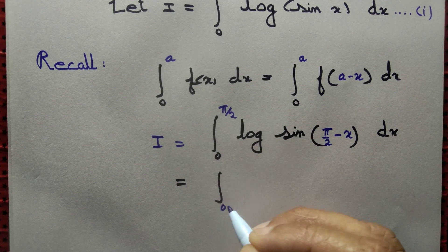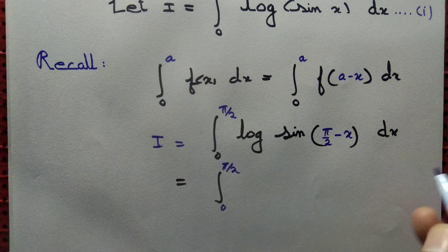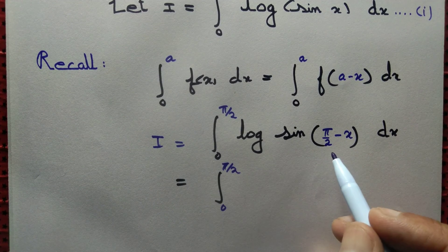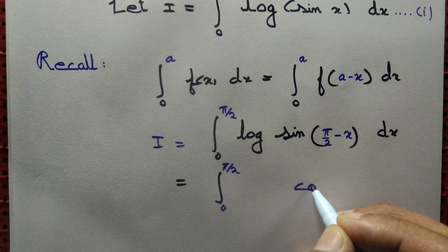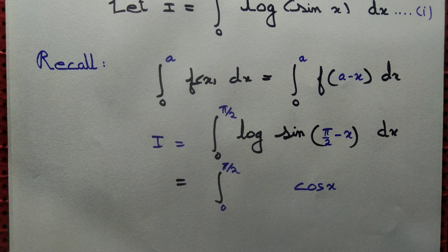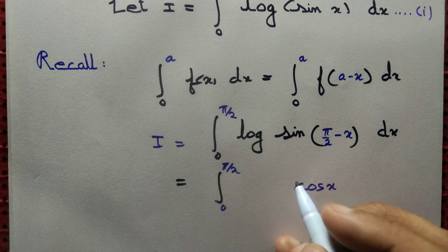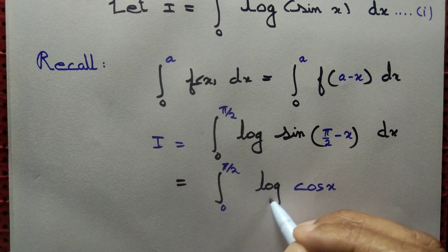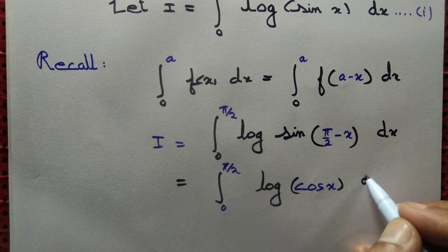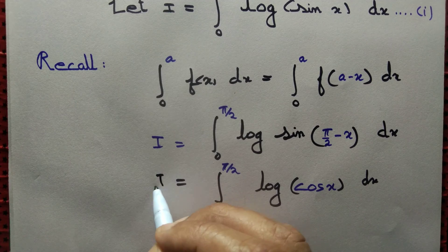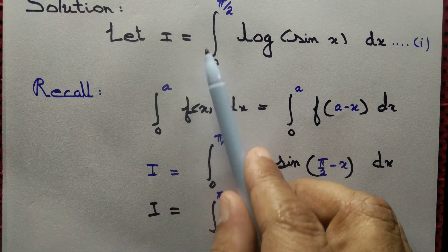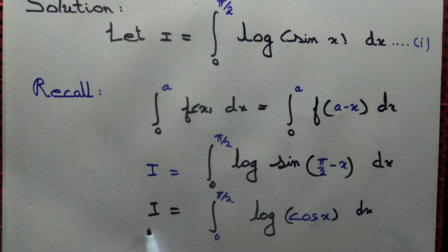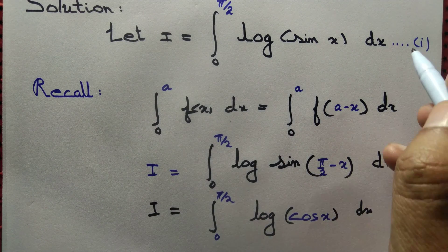That equals the integral from 0 to π/2 of log(sin(90° − x)) dx. Since sin(90° − θ) = cos θ, we have log(cos x). So we started with i equal to the integral from 0 to π/2 of log(sin x), and now we obtain i equal to the integral from 0 to π/2 of log(cos x). Let's call these equation 1 and equation 2, and add them.